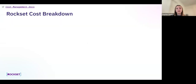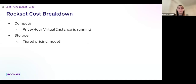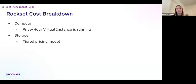First, going into the Rockset cost breakdown. Rockset cost is broken down into compute and storage. Compute consists of price per hour that your virtual instance is running. A virtual instance is a set of compute resources used to process streaming ingest and your queries. You're charged for every hour that the virtual instance is running based on your virtual instance size.